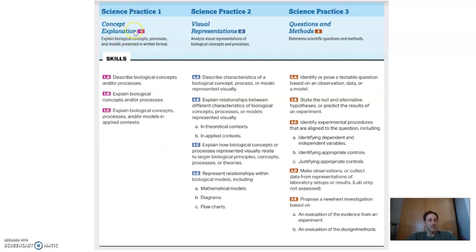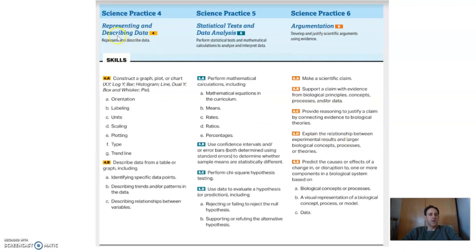Practice one, concept explanation, the idea of just explaining how things work. Visual representations has you look at a diagram or a chart or something to try and interpret what's happening. We've certainly done a lot with that. Questions and methods. This is kind of the traditional scientific process, kind of a formal lab thing where you pose a question, state a hypothesis, design an experiment, collect observations, that kind of thing. Representing and describing data would be kind of like the post-lab part. So building graphs, looking at data tables, that kind of thing.